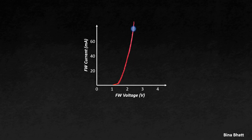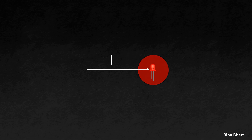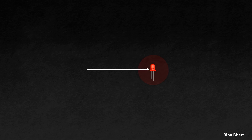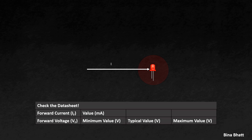The brightness of an LED is determined by the amount of current flowing through it. But a large amount of current can either reduce its lifespan or damage it permanently. So always consult the datasheet for the maximum current limit and never breach it.